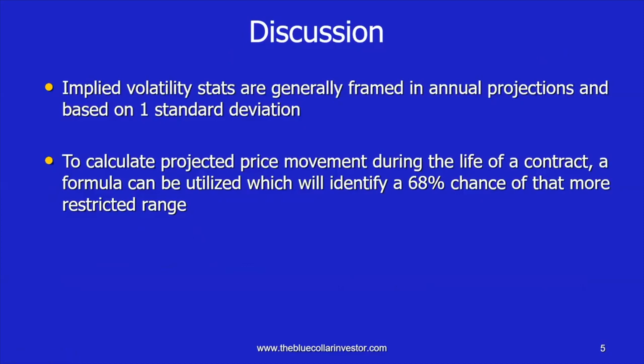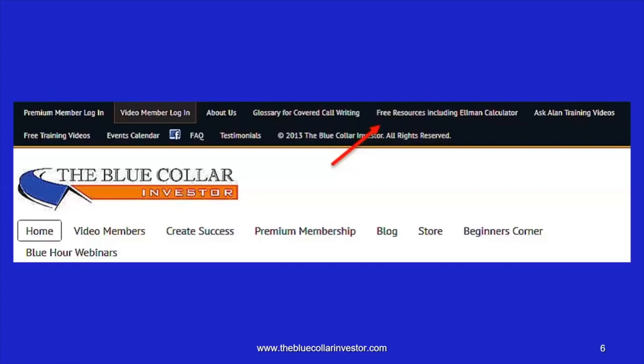To summarize: implied volatility stats are generally framed in annual projections and based on one standard deviation, and do not give direction — up or down. To calculate the projected price movement during the life of the contract — in this case 20 days — a formula can be utilized which will identify a 68% chance of that more restricted range. That's basically what implied volatility is, what it means to us, and how it applies to our option contract timeframes.